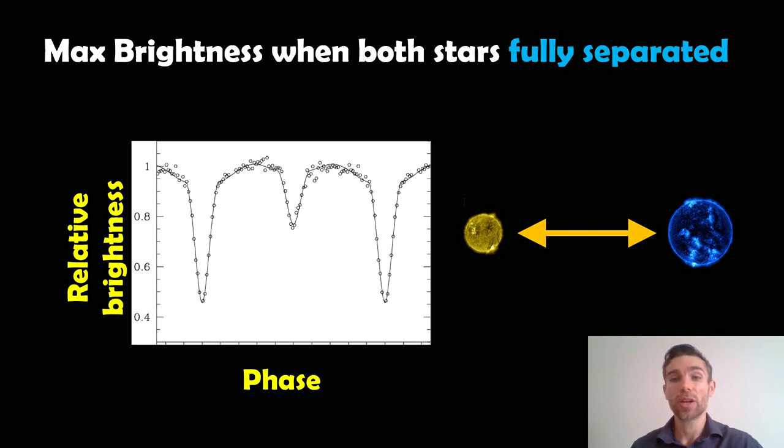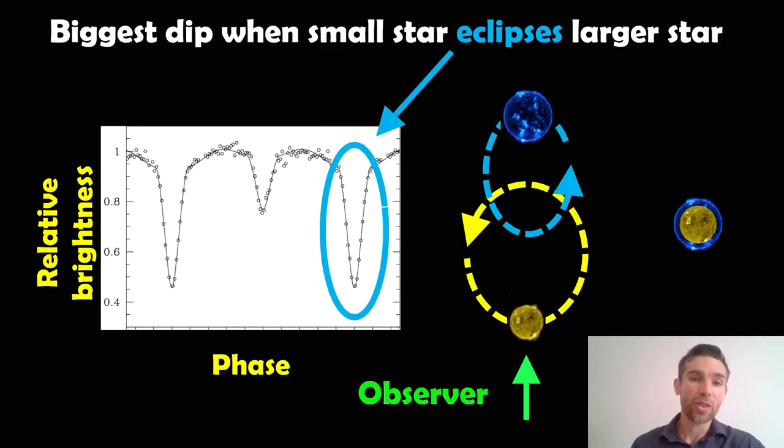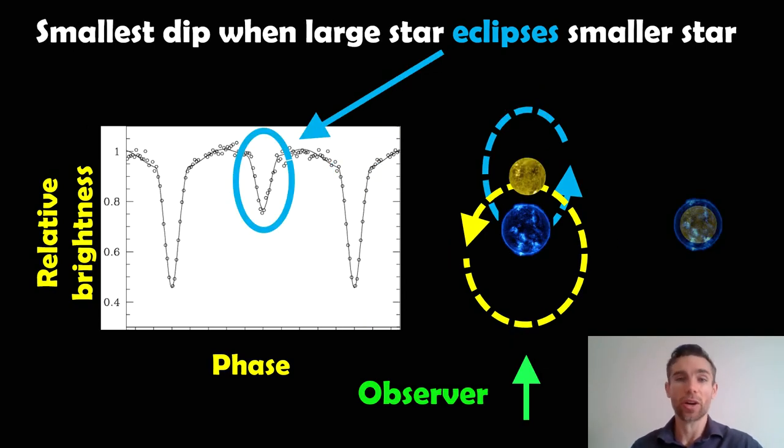Now when both stars are fully separated we actually get the maximum brightness. So the peak brightness is when they are fully separated, they're not eclipsing each other at all. Now the biggest dip that we get is when the small star, so in this case here the yellow one, is in front of the bigger star. So that basically means it's blocking out the most light. The bigger star is going to be brighter so it blocks out more light in that configuration there. And then on the other way around when the bigger star eclipses the smaller star then you get the smaller dip in brightness as we view it.